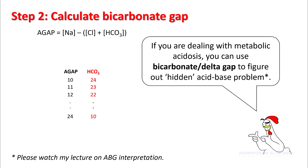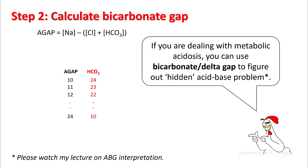Step 2: after you have figured out the anion gap, you can calculate the bicarb gap or delta gap to figure out the hidden acid-base disorder. For this, please watch my lecture on ABG interpretation to understand this in more detail.